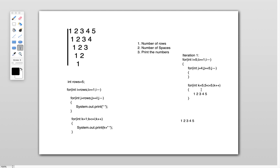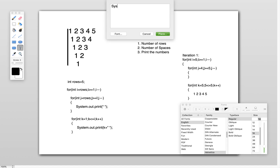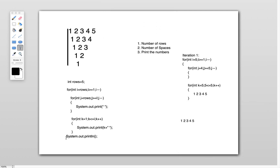k will be 6; 6 less than or equals to 5 — condition is false, so it comes out of the k loop. The first row is printed: 1, 2, 3, 4, 5. To go to the next line, I need System.out.println. This executes when it comes out of the k loop, moving the cursor to the next line.